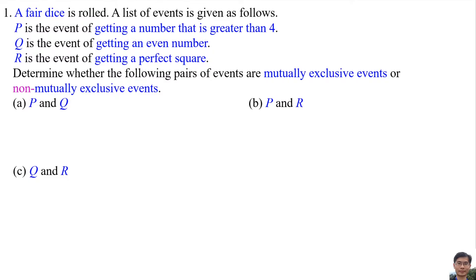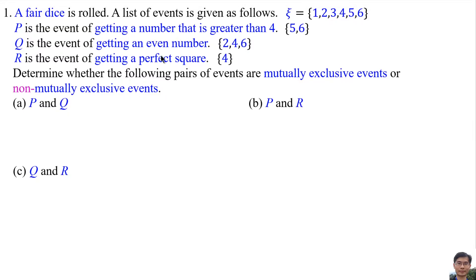Part A: P and Q. Since a fair die is rolled, the universal set is {1, 2, 3, 4, 5, 6}. Set P is {5, 6}, set Q is {2, 4, 6}, and set R is {1, 4}. For P and Q, the intersection of P and Q has the common element 6, so the number of elements of P intersection Q is 1.